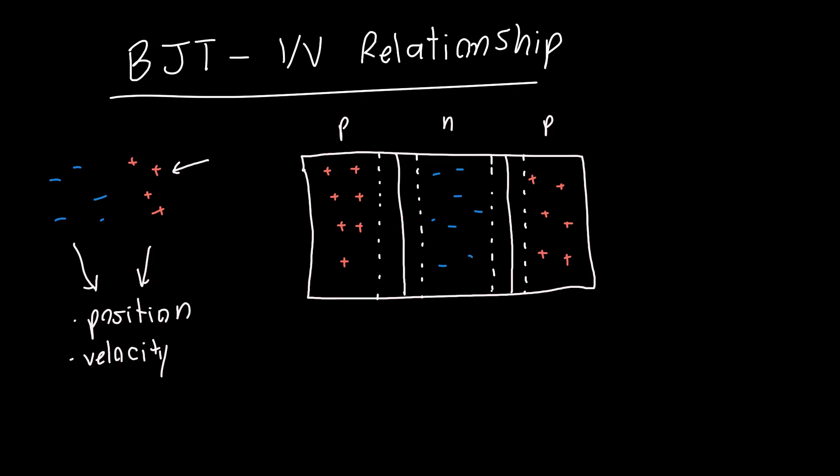So we want to know where are the charge carriers? Well, if we don't apply a voltage, if nothing interesting is happening, then we know where all the charge carriers are. This P-side has a doping concentration of, let's call it Na1. This P-side has a doping concentration of Na2. And this has a doping concentration of, let's just call that Nd. So we're done. But this is incredibly boring.